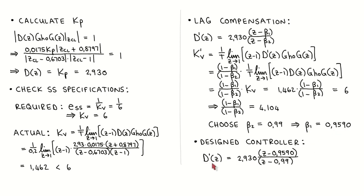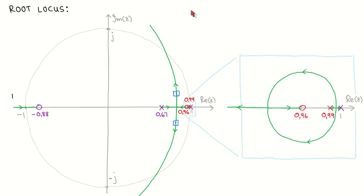The controller updated with lag compensation is now given by this transfer function. Looking at the root locus of the plant with the lag controller: the plant zero and two plant poles are shown in purple and the desired dominant closed loop poles in blue. We have added a pole and zero close to z equal to 1 shown in red. Since the added pole and zero are very close together, the root locus looks very similar to that of the plant with a proportional controller. Zooming into the region close to z equal to 1, we see that there is a locus between the plant pole and the controller pole which breaks away and joins the locus on the real axis to the left of the controller zero.